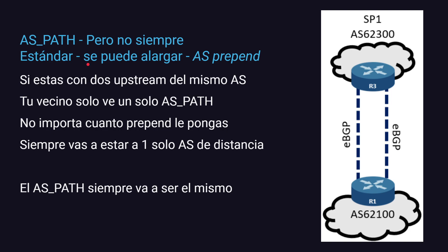Sin embargo, el AS-PATH prepend no siempre se puede extender o alargar. Si tenés dos links hacia el mismo peer — por ejemplo dos BGP con Lumen —, tu vecino solamente ve un solo AS-PATH: el de Lumen y el tuyo. Sin importar cuánto prepend le pongas, siempre va a estar a un solo AS de distancia, porque estás conectado directo. Aunque tengas dos links iguales, el AS-PATH siempre va a ser el mismo.